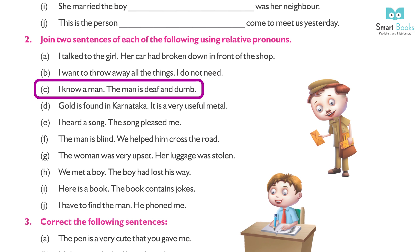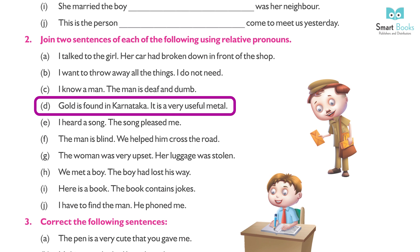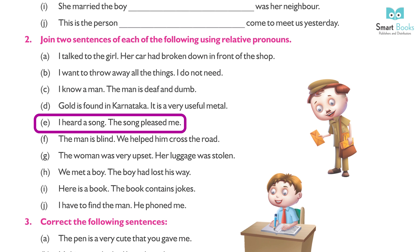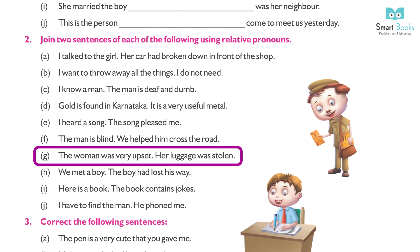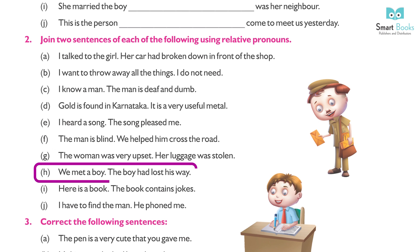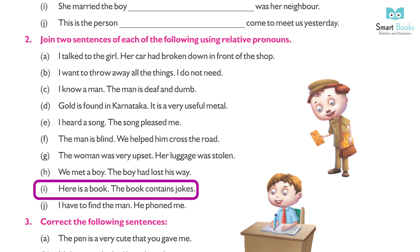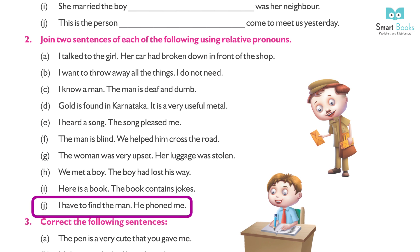(c) I know a man; the man is deaf and dumb. Answer: I know a man who is deaf and dumb. (d) Gold is found in Karnataka; it is a very useful metal. Answer: Gold is found in Karnataka, which is a very useful metal. (e) I heard a song; the song pleased me. Answer: I heard a song which pleased me. (f) The man is blind; we helped him across the road. Answer: The man is blind, whom we helped to cross the road. (g) The woman was very upset; her luggage was stolen. Answer: The woman was very upset, whose luggage was stolen. (h) We met a boy; the boy had lost his way. Answer: We met a boy who had lost his way. (i) Here is a book; the book contains jokes. Answer: Here is a book which contains jokes.